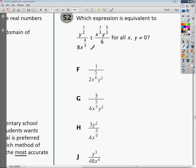Welcome, this is the Tennessee Algebra 2 end of course practice test, question number 52. The question says, which expression is equivalent to y to the 1 half power over 8x to the 4 thirds power divided by x to the 1 third times y to the 5 over 2 power divided by 6.